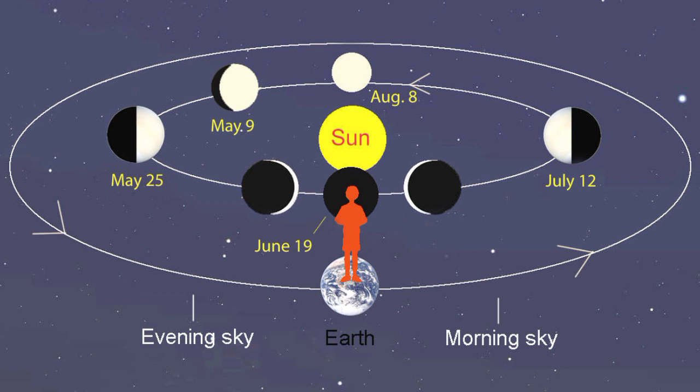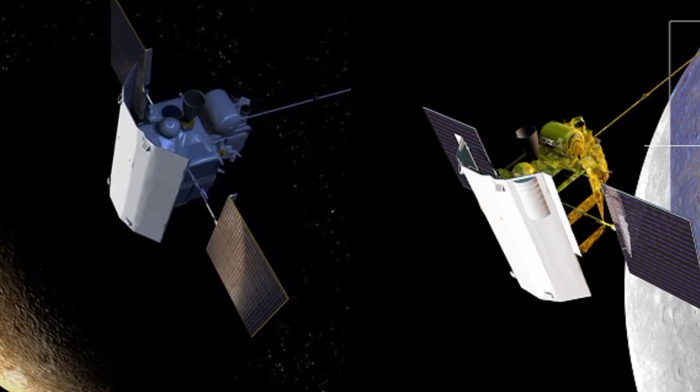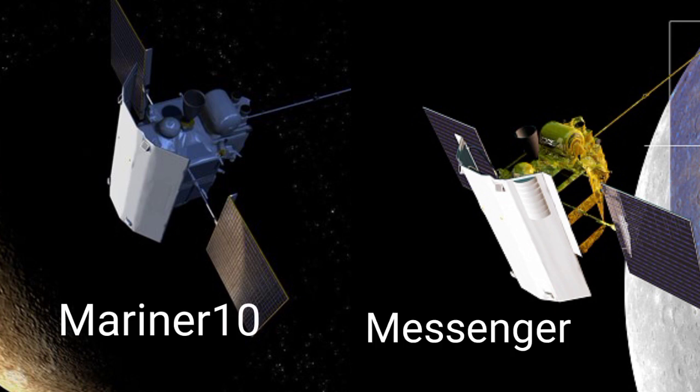Mercury slings around the Sun in just 88 days. From Earth, Mercury is difficult to observe because it's fleeting and so close to the Sun, and so far it's only been visited by two spacecraft, Mariner 10 and Messenger.